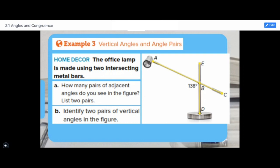Now, identify two pairs of vertical angles in the figure. Vertical angles are opposite angles and they are congruent. They have the same measure. I can name two vertical angles that are EBC and ABD. Also, another pair is CBD and EBA.